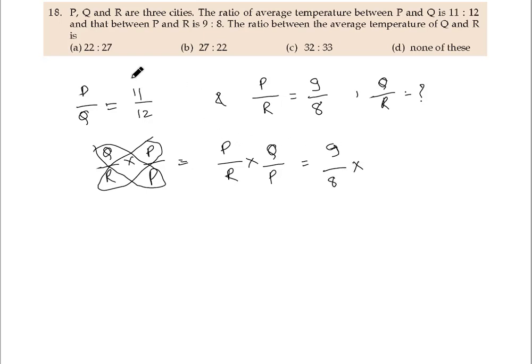P by Q is given as 11 by 12, so Q by P will be 12 by 11.